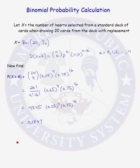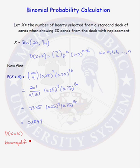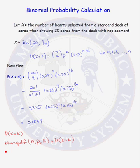There is an easy way to do this probability calculation on your calculator. If we want the probability that X equals K, there is a function on the TI calculator called binomPDF. If you give it parameters N, P, K, it will return the probability that X equals K. So if we want the probability that X equals 4, we can do binomPDF with N equal to 20, P equal to 1/4, and K equal to 4.